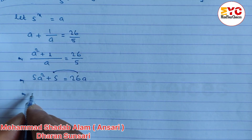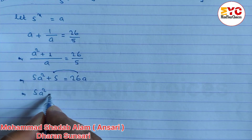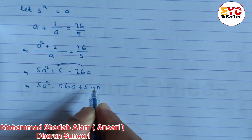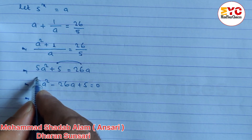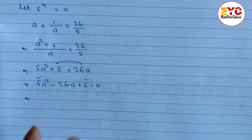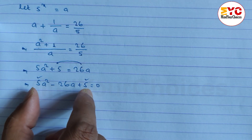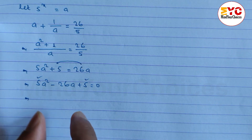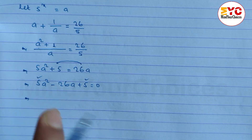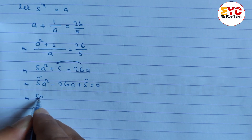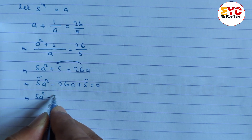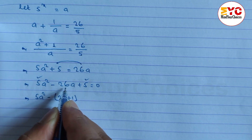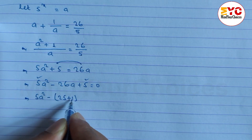Now we have to factorize. First and last term we have to multiply: 5 into 5 is 25. Multiply 25, add 26. This number we have to find factors for — multiply to get 25, add to get 26. So we split as 25 plus 1.